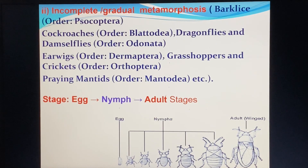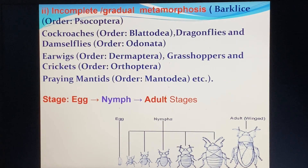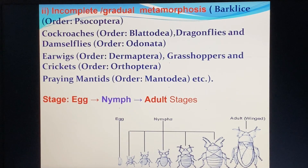In incomplete metamorphosis, the larva stage is absent, so it is called incomplete metamorphosis — larva and pupal stages. The larva stage is known as a nymph, and the pupal stage is absent. In incomplete metamorphosis, the pupal stage is absent and the larva is called a nymph.